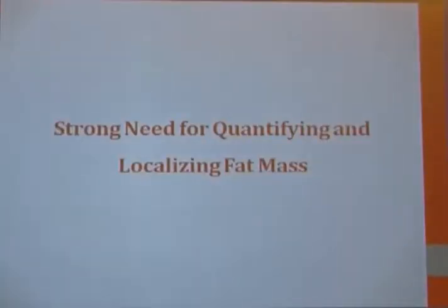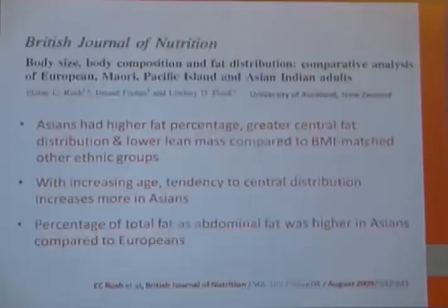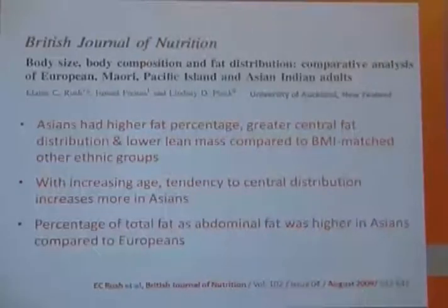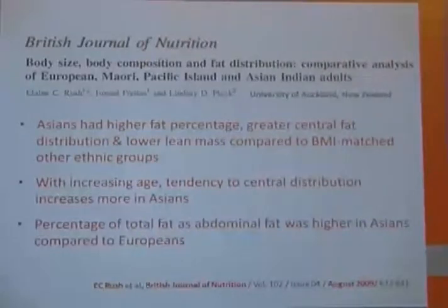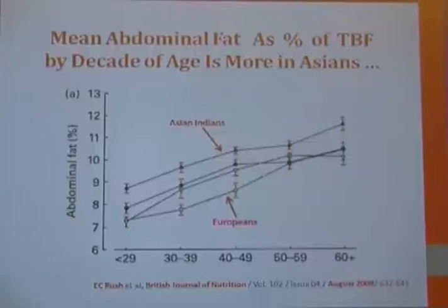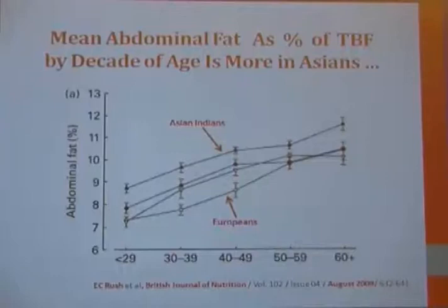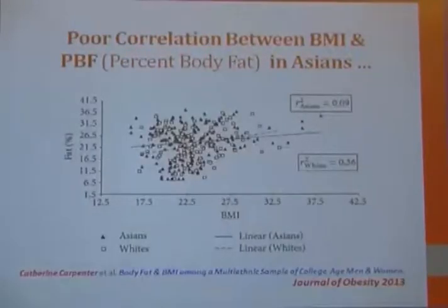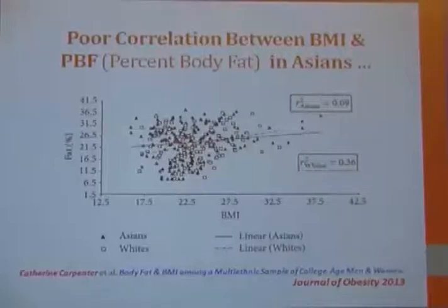The strong need for quantifying and localizing fat mass is much more important in the Indian context. A recent paper in the British Journal of Nutrition published that Asians have higher fat percentage, greater central fat distribution, and lower lean mass compared to other ethnic groups for the same BMI. With increasing age, the tendency to central fat distribution increases more in Asians, and the percentage of total fat as abdominal fat is higher in Asians compared to Europeans. There is a poor correlation between BMI and percentage body fat in Asians.